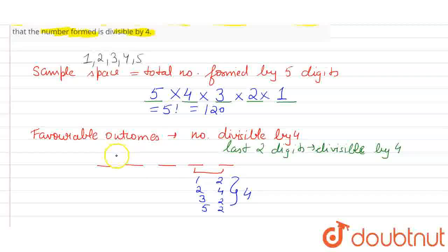Now the remaining places are only 3. So here 3 digits can come, here 2 digits can come, and here only 1 digit can come out of 5. Therefore our favorable outcome will become 3 into 2 into 1 into 4. This 4 is this 4 combinations. So now this is equal to 24.